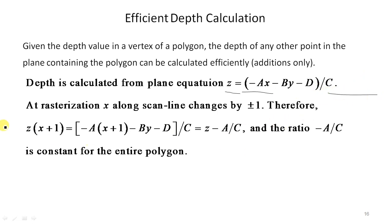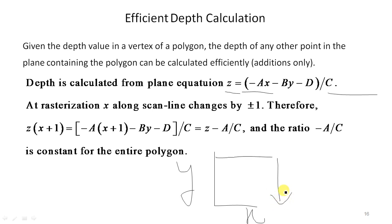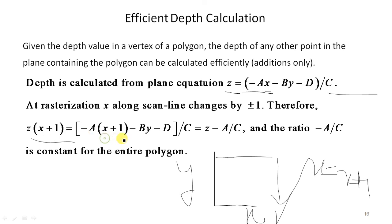For efficient depth calculation during rasterization, the scan line moves left to right and top to bottom. When moving to the next pixel, x becomes x plus 1. So Z at (x+1) equals (−A(x+1) − By − D) / C. Expanding the bracket: Z(x+1) = (−Ax − By − D)/C − A/C, which means Z(x+1) = Z(x) − A/C.